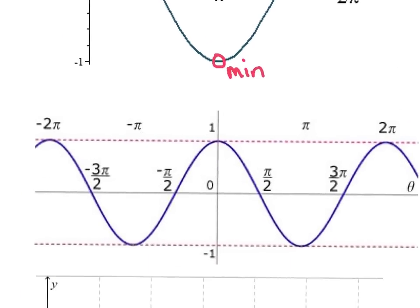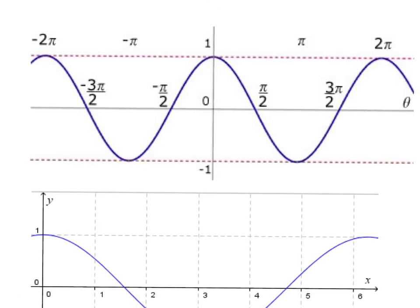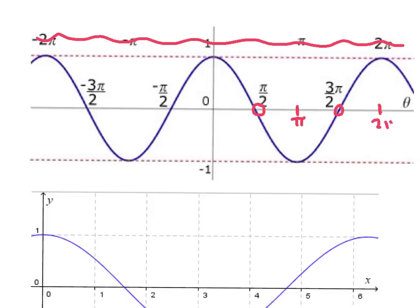Let's look at a few other examples. My second picture shows two complete cycles of the cosine curve. The labels didn't translate nicely so let's ignore those. On the x-axis, the first root is at pi over 2, the min is at pi, the second root is at 3 pi over 2, and the second max is at 2 pi. The graph is symmetric with respect to the y-axis, so the other roots are at negative pi over 2, with a min at negative pi, a root at negative 3 pi over 2, and a max at negative 2 pi.